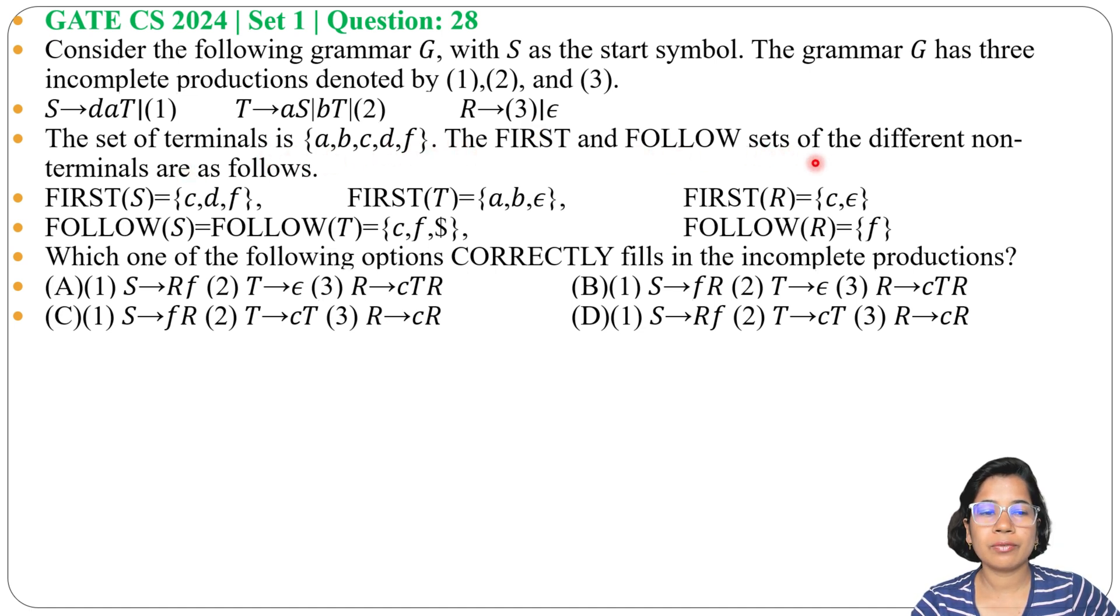The set of terminals is {a,b,c,d,f}. The FIRST and FOLLOW sets of different non-terminals are as follows. These are the first and follow. Which one of the following options correctly fills the incomplete productions? And four options are given.